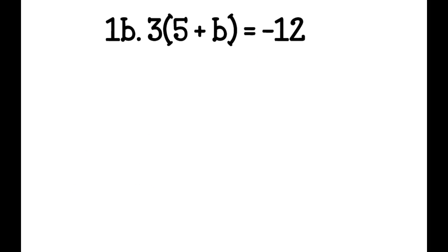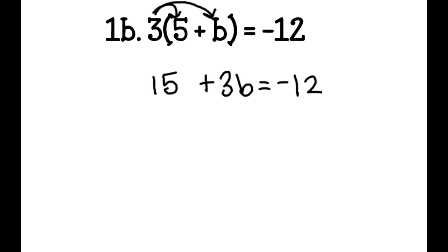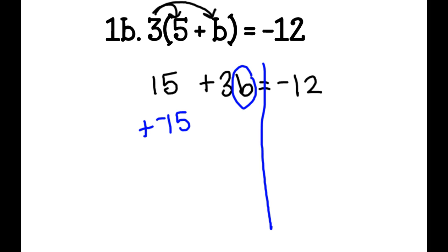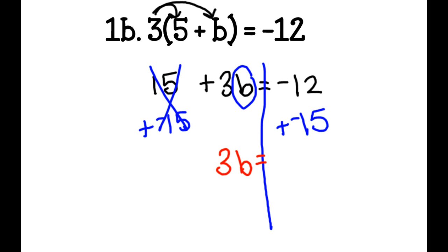Problem 1b: I have 3 times the quantity of 5 plus b equals negative 12. Again, I'm going to use distributive property, and I have 15 plus 3b equals negative 12. I have my two sides of my equation, my variable circled. To move that 15, I'm going to add a negative 15. These cancel out, and I'm left with 3b equals negative 12 plus negative 15.